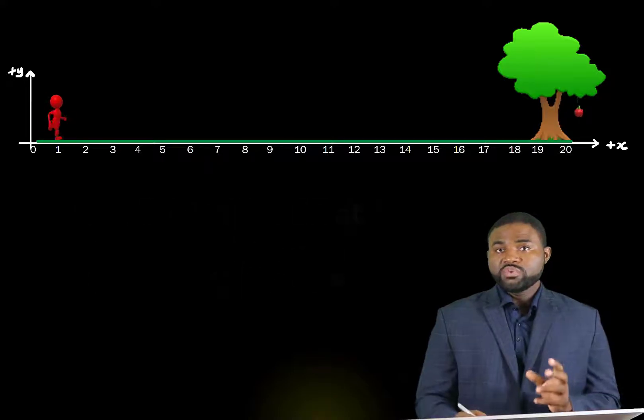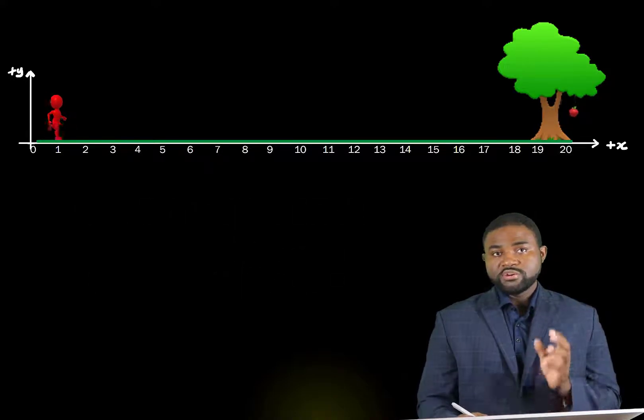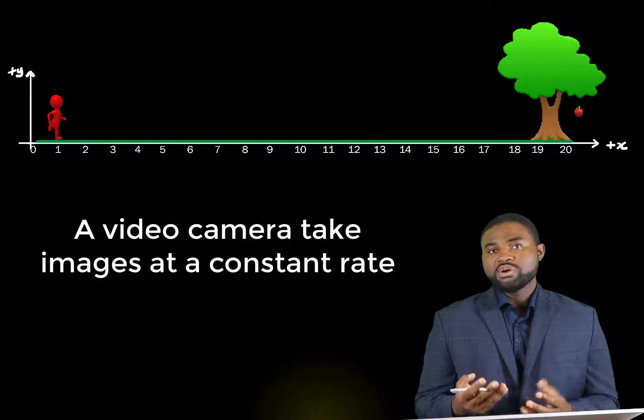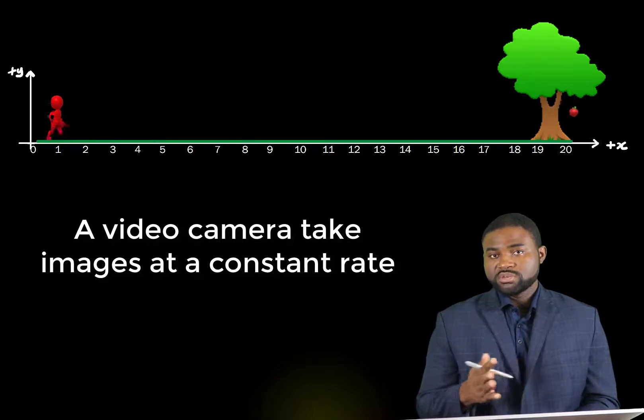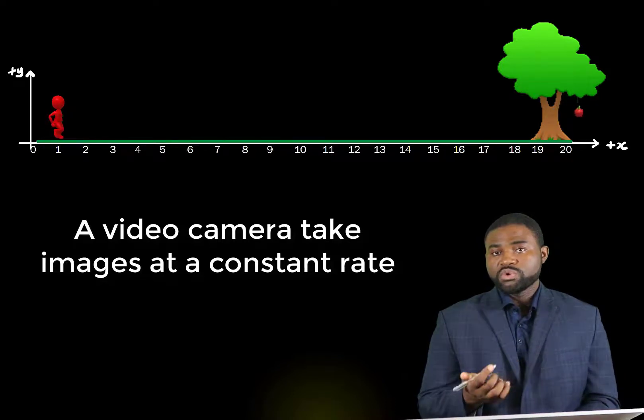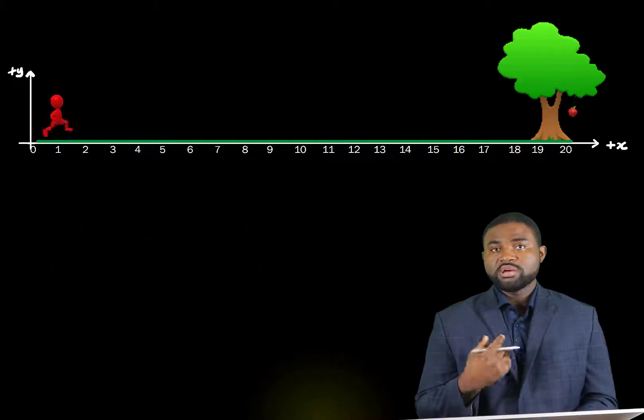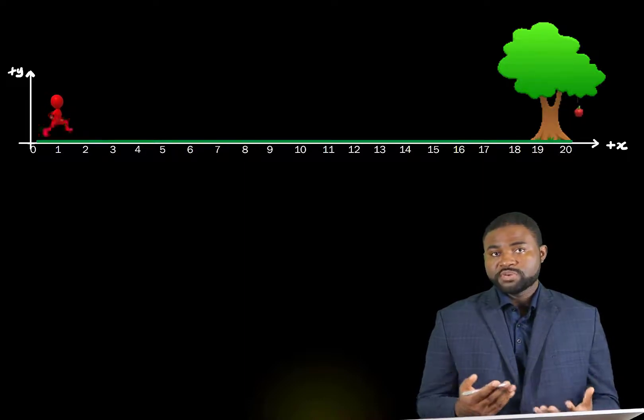Now an easy way to study his motion is to make a video of him running. A video camera usually takes images at a constant rate. The rate at which a camera takes images is what we call the shutter speed. And for the camera that I'm using, the shutter speed is about 30 images per second.